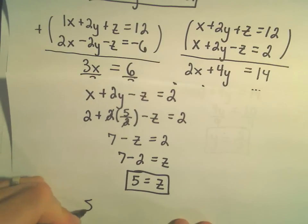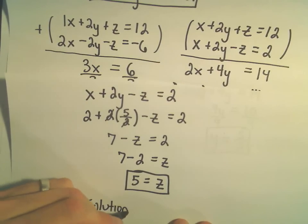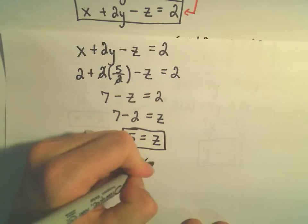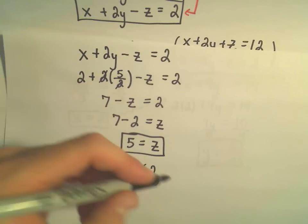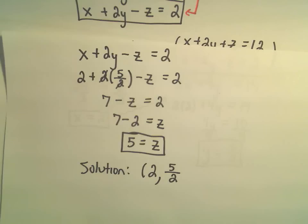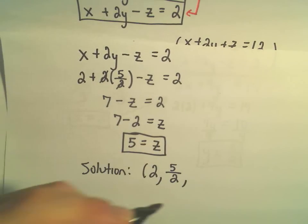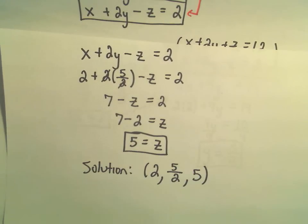So, in summary, it says our solution, we figured out our x value had to be 2. We decided our y value had to be 5 halves, and we found out that our z value has to be positive 5.